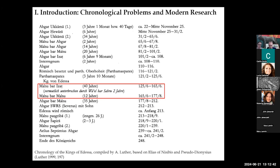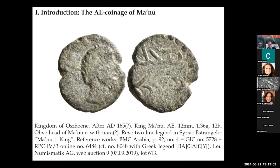The two main persons we are concerned with today both have the first name Manu but different affiliations: Manu bar Isad (Manu, son of Isad) and Manu bar Manu. Many scholars have supposed that Manu bar Manu is actually this king Manos Philoromaios we find on the reverse of the coins we are discussing today.